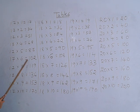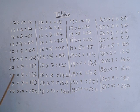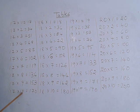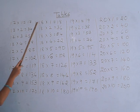17 sixes are 102, 17 sevens are 119, 17 eights are 136, 17 nines are 153, 17 tens are 119.